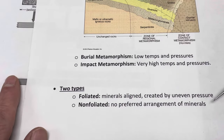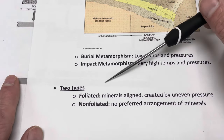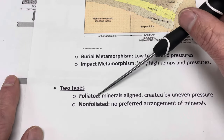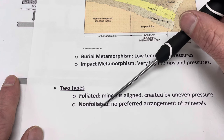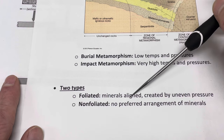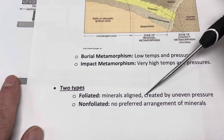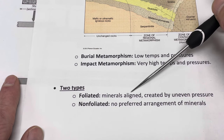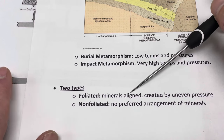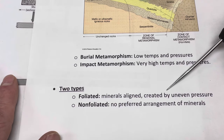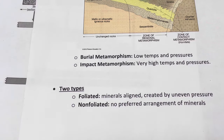Metamorphic rocks are going to be of mainly two types. They'll either be foliated or non-foliated. Foliated means that the minerals are aligned — that the rocks have been squeezed, probably due to regional metamorphism or uneven pressure — and the minerals are aligned in a preferred direction.